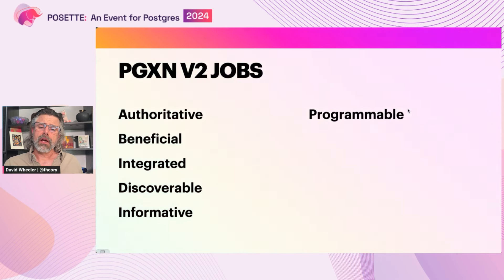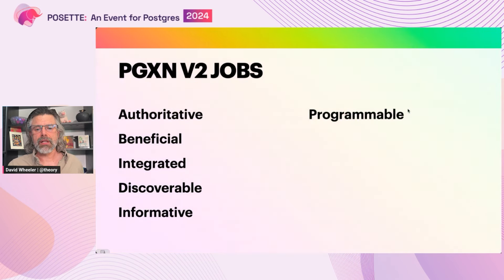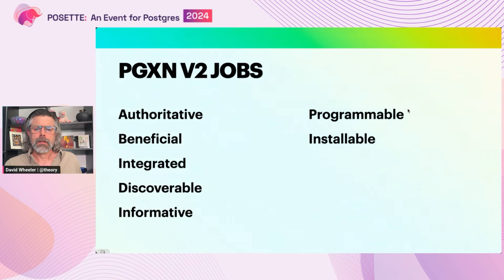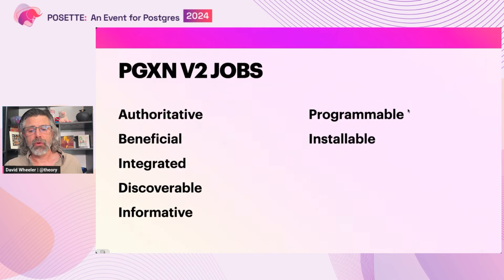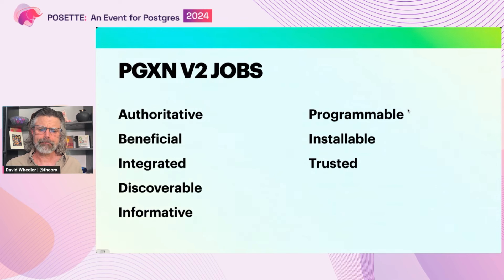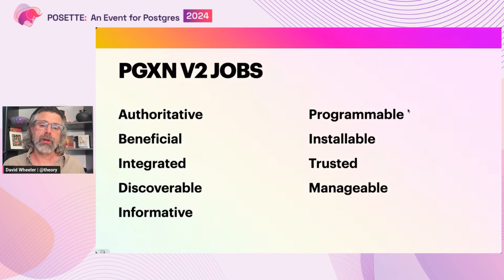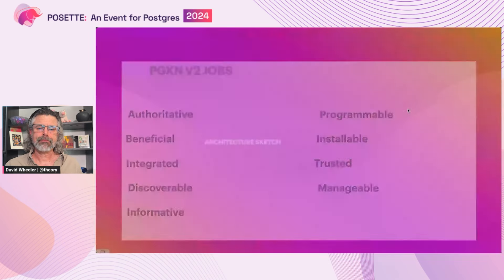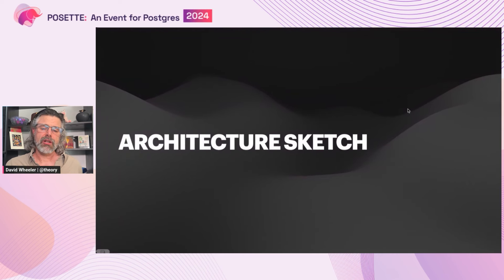Another job is for the services and ecosystem to be programmable, where distribution services provide stable, easy-to-use, and comprehensive APIs with which downstream developers can build other tools and products that we can't even imagine. It needs to be installable — providing automatic binary packaging for a wide variety of platforms for as many of the indexed extensions as possible. Furthermore, it needs to be trusted, building in some validation of extensions to protect from supply chain vulnerabilities. And finally, it needs to be manageable, providing intuitive, powerful interfaces for installing and managing extensions.